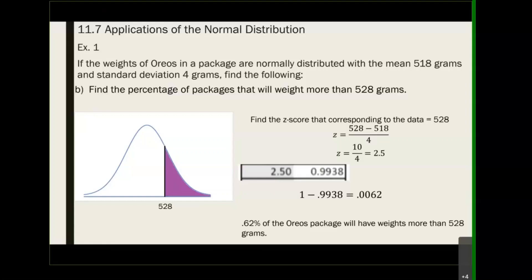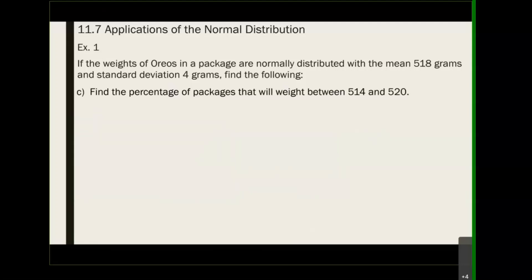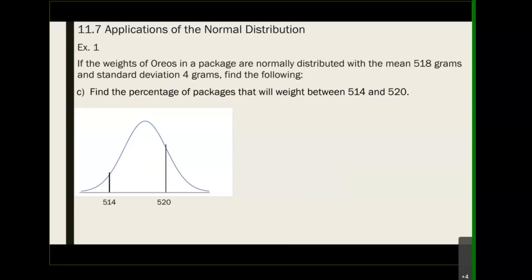Let's do the last part, and then I will take any questions you might have. The last part is: find the percentage of packages that will weigh between 514 and 520. Same idea — sketch your normal distribution curve and identify your endpoints. 514 is smaller and 520 is bigger, so put 514 on the left and 520 to the right.